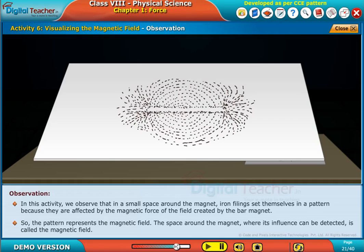So the pattern represents the magnetic field. The space around the magnet where its influence can be detected is called the magnetic field.